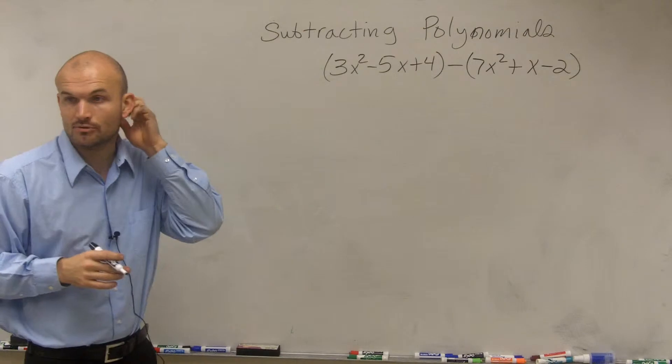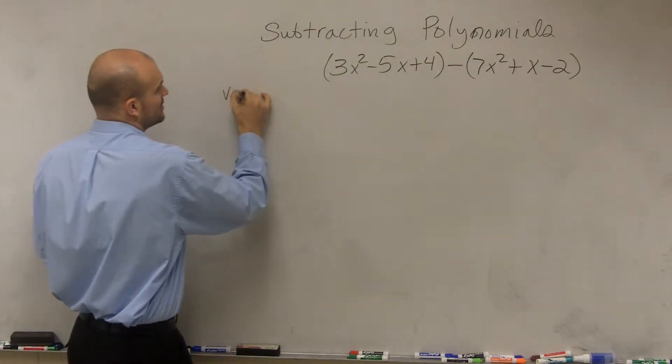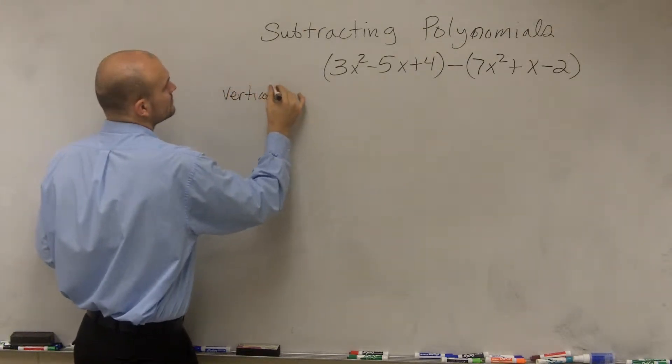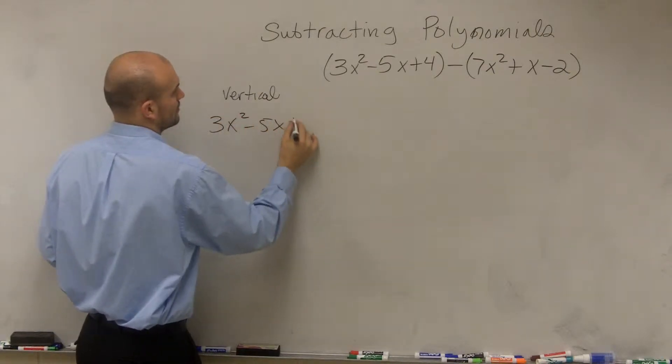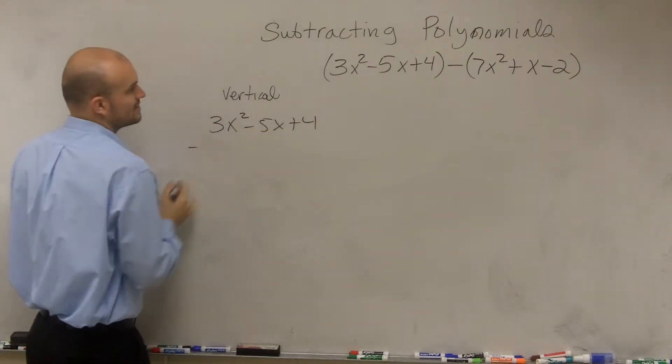So the first way we can do is just do the vertical method. So again, like addition, the vertical method is going to be, you're going to take one polynomial and you subtract the other polynomial.